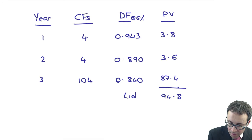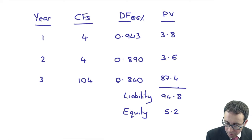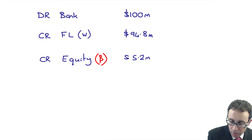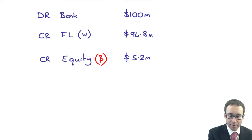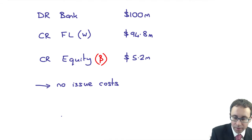So the liability element is $94.8 million. Since the proceeds were $100 million, the equity is $100 million less $94.8 million, which equals $5.2 million. So we would credit the financial liability at $94.8 million and credit equity at $5.2 million — but remember, that is assuming there are no issue costs.